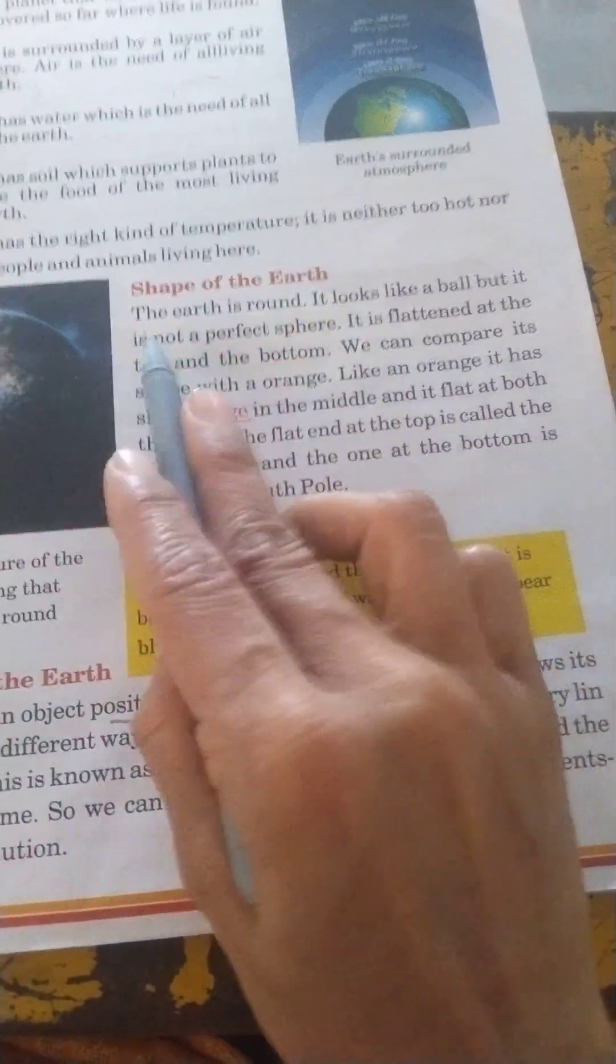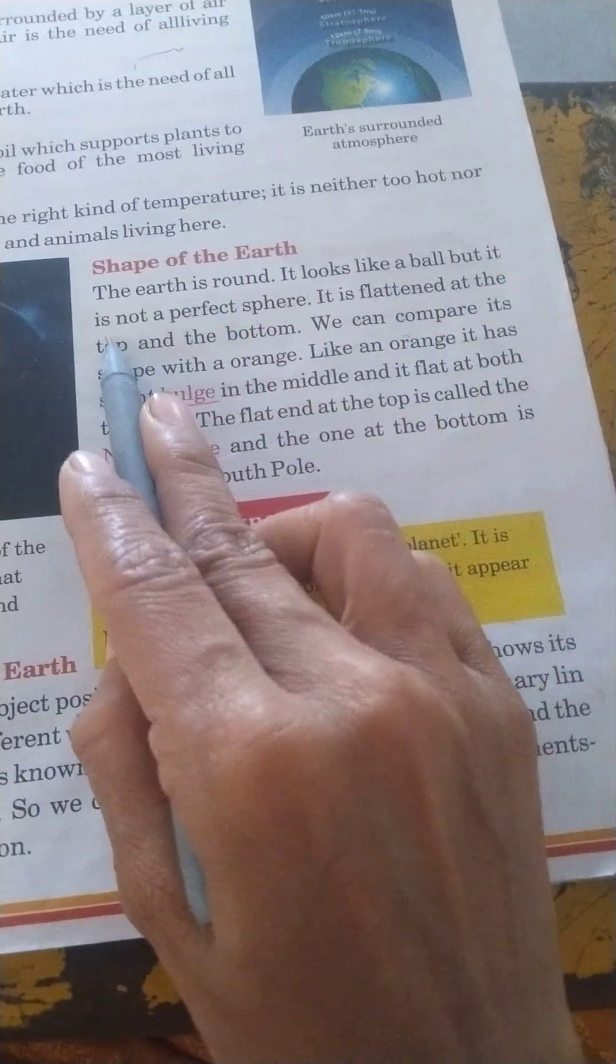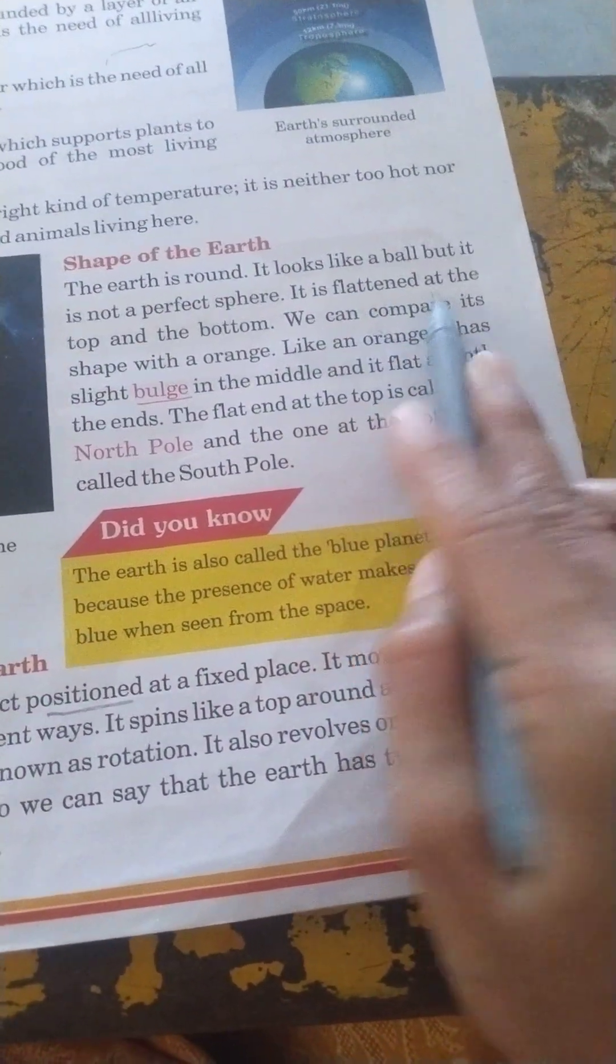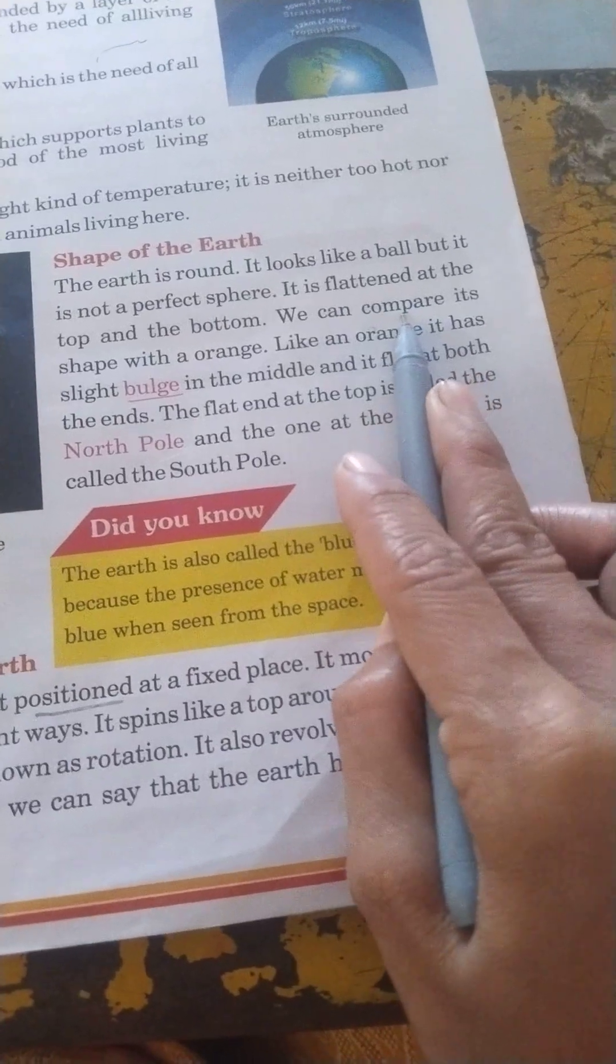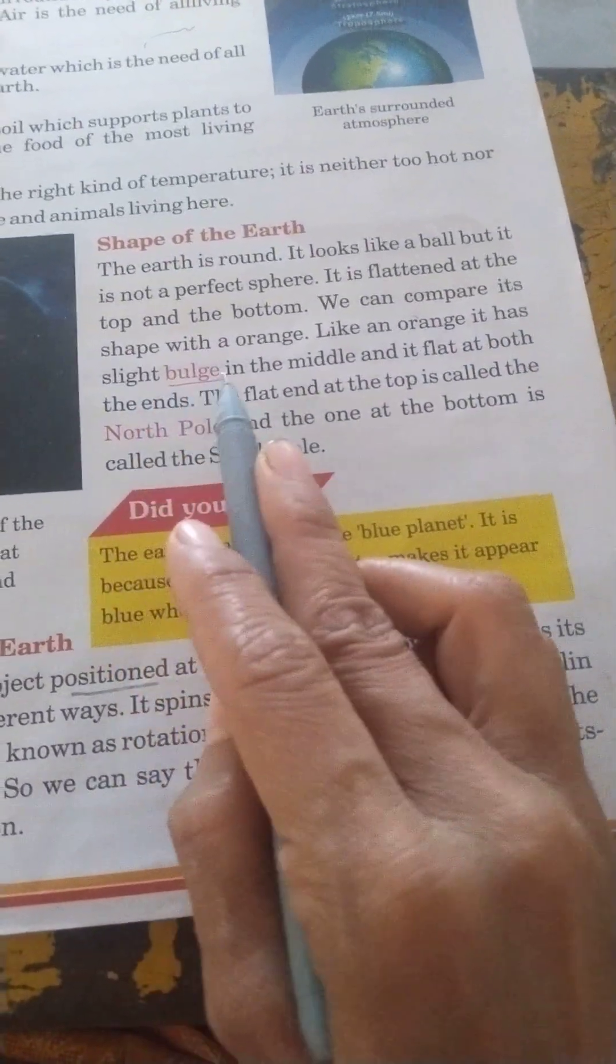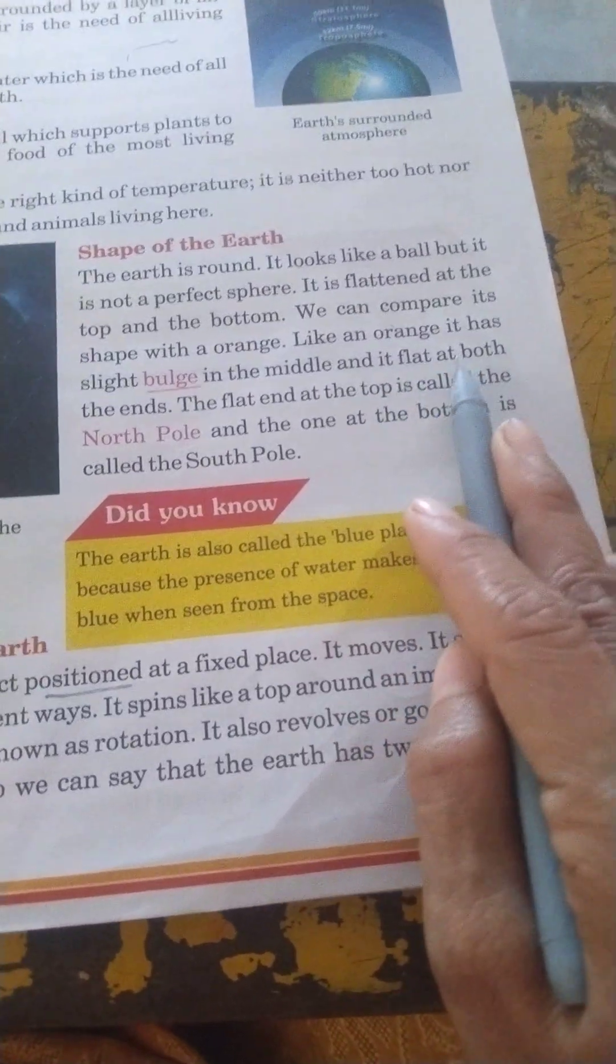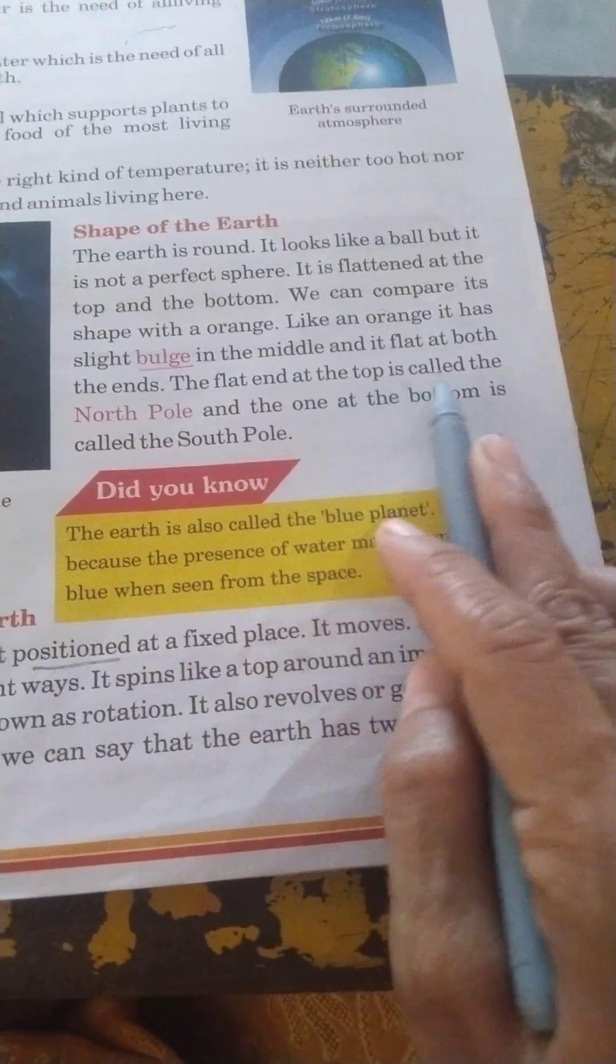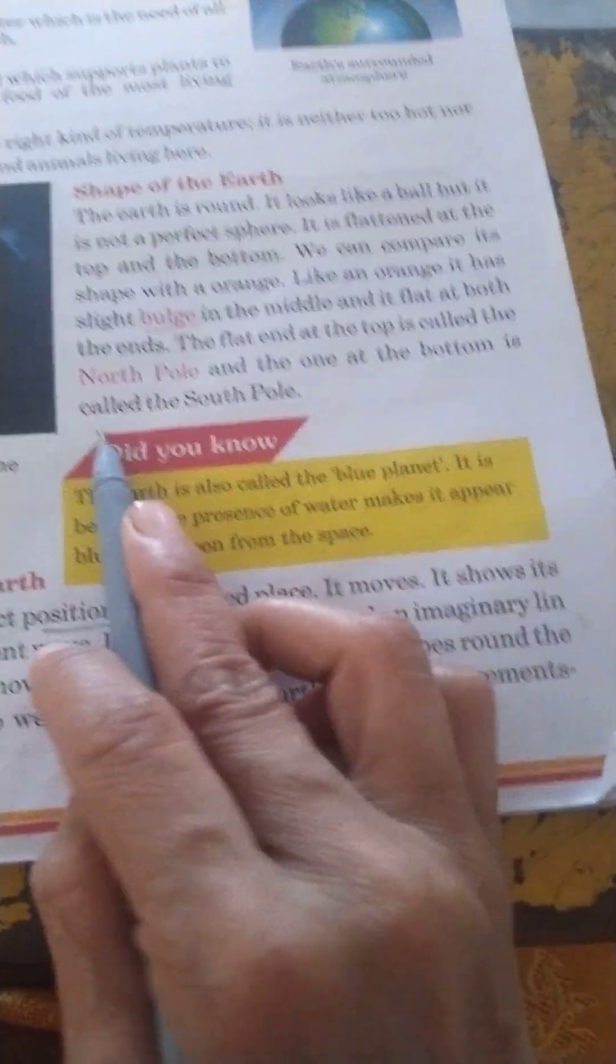Shape of the earth. The earth is round. It looks like a ball but it is not a perfect sphere. It is flattened at the top and the bottom. We can compare its shape with an orange. Like an orange, it has a slight bulge in the middle and is flat at both the ends. The flat end at the top is called the north pole and the one at the bottom is called the south pole.